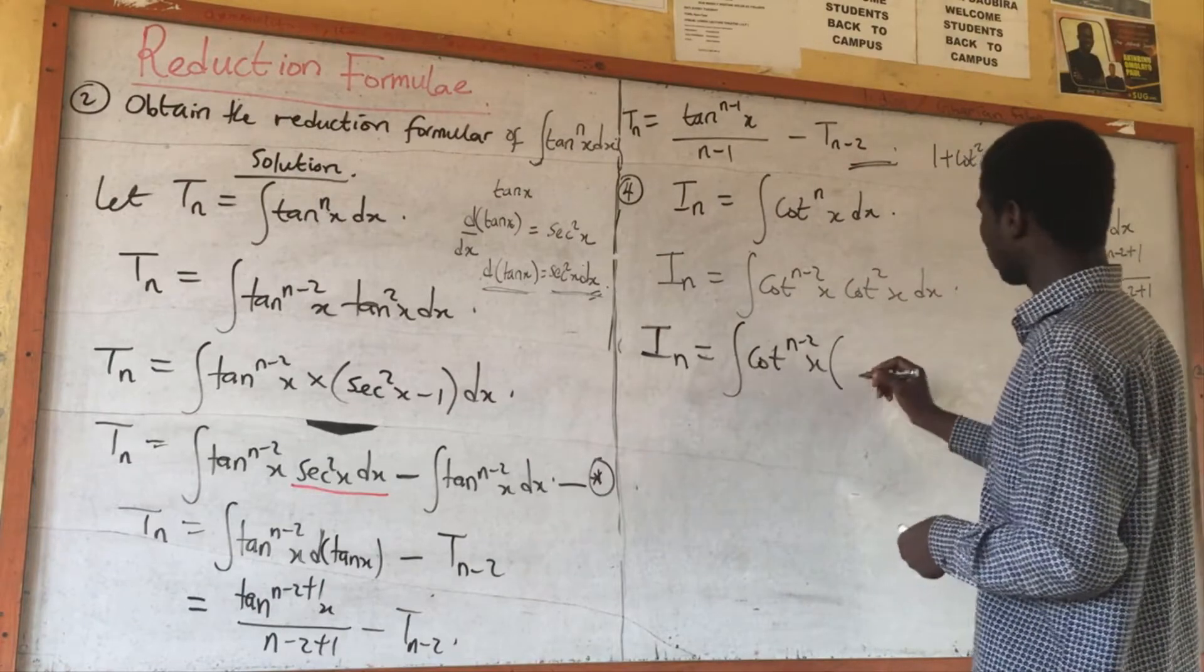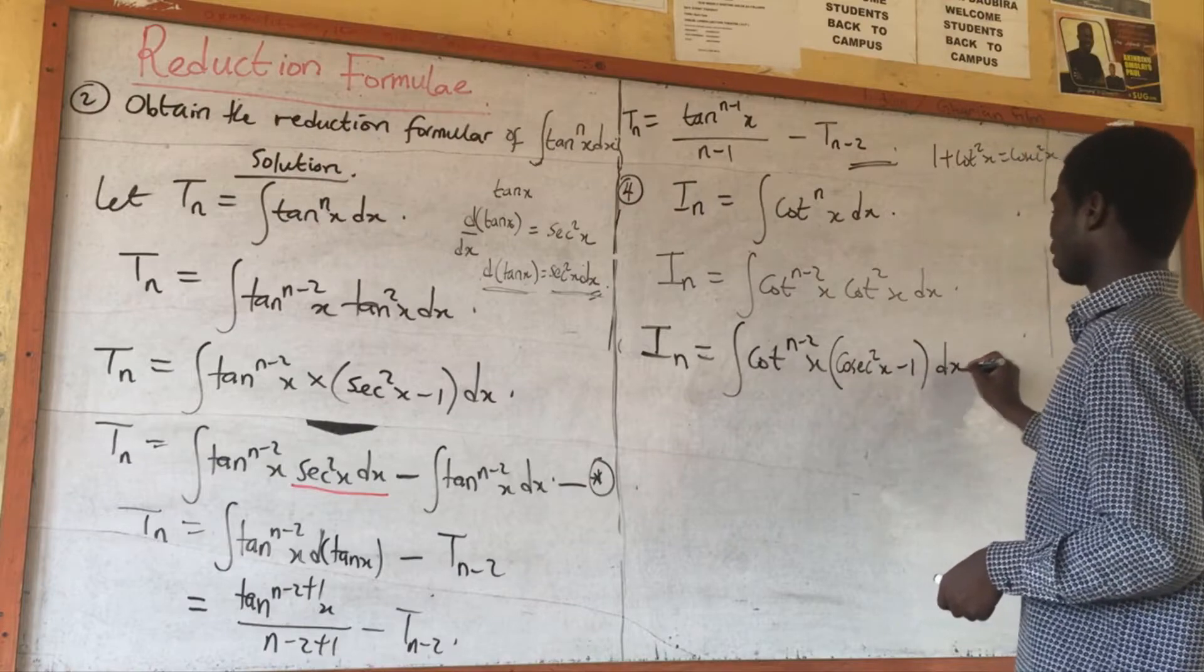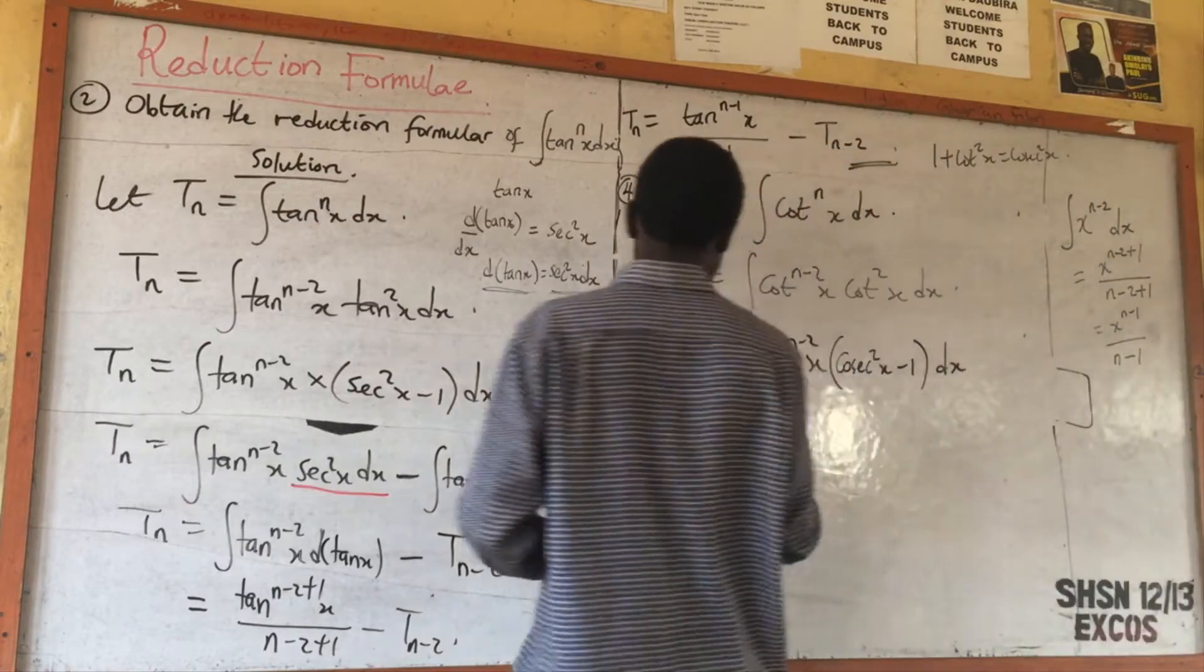This one will now be equal to csc²s minus 1 ds.